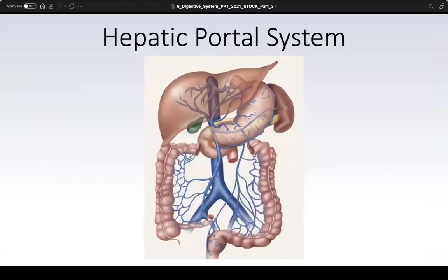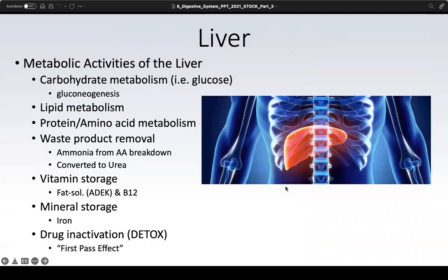Moving on to the hepatic portal system — at its core is the hepatic portal vein. The hepatic portal vein is not the same as the hepatic vein. It shunts nutrients absorbed from the duodenum and directs them to the liver, where they can be activated to maximize the nutritional value of what we consume.